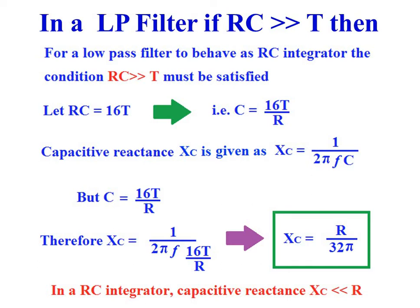As π is approximately 3.14, the denominator of this equation is around 100, so XC is equal to R divided by 100. In an RC integrator, capacitive reactance XC is much lower than resistance R. So if the capacitive reactance in a low-pass filter is much lower than the resistance value, the low-pass filter behaves as an integrator.